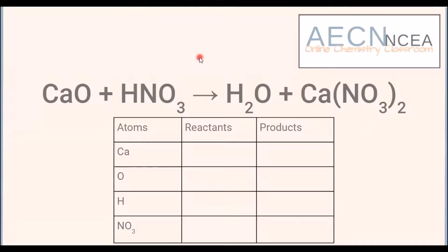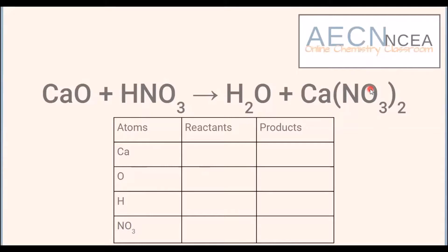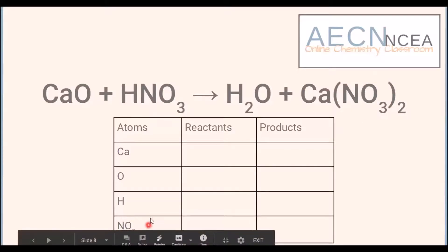In this next example we have a polyatomic ion involved. From a previous video we looked at the polyatomic ions we need to know, and this one is nitrate — NO3 — which has more than one type of atom: nitrogen and oxygen, specifically three oxygens and one nitrogen. What we notice is that the nitrate stays together on both the reactant side and the product side. So let's not make it more complicated — when writing atoms in our table we keep NO3 together as a unit, otherwise we'd be counting oxygen atoms from both the nitrate and other compounds.